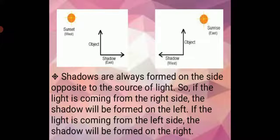Students, you can see there is a sunrise picture and the sun always rises in the east direction. So at that time you can see your shadow in the west. But when the sun sets from the west, the shadow will be formed in the east.